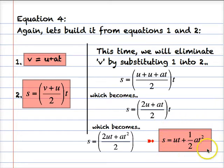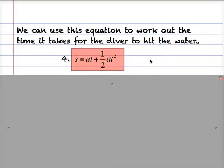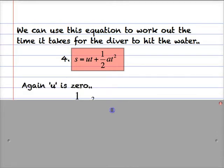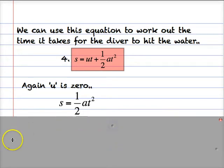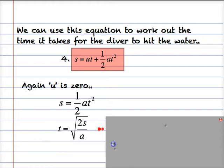As the initial speed is often zero, the ut term is often taken away. Let's see how we can use this equation to work out the time it takes for the diver to hit the water. We have s = ut + ½at². u is zero, so we can forget that part, leaving s = ½at². Rearranging gives t = √(2s / a) — I multiplied both sides by 2, divided both sides by a, and took the square root of both sides to cancel the t squared.